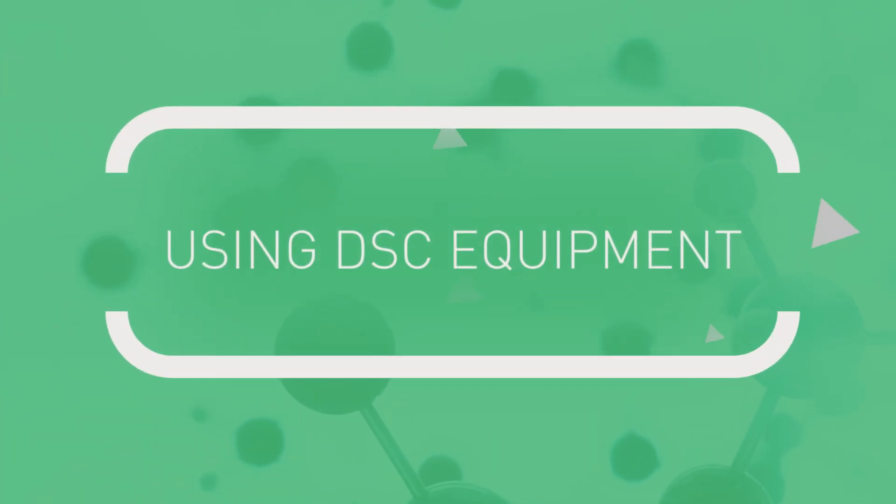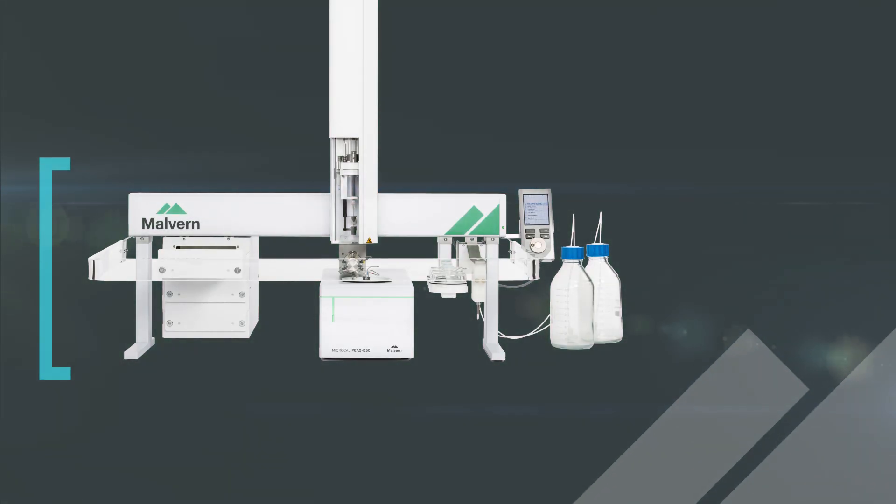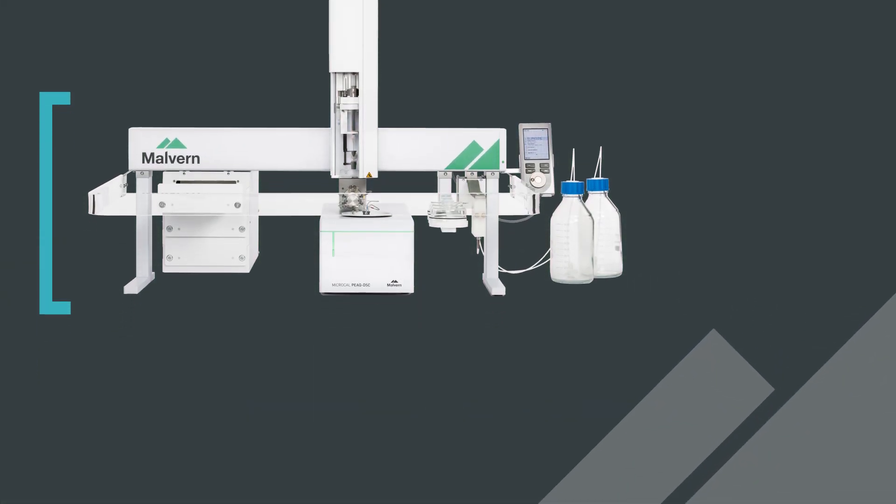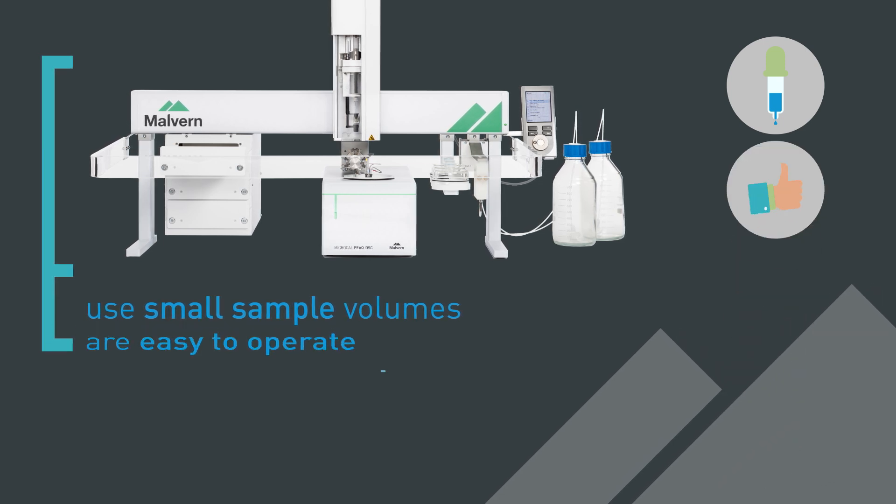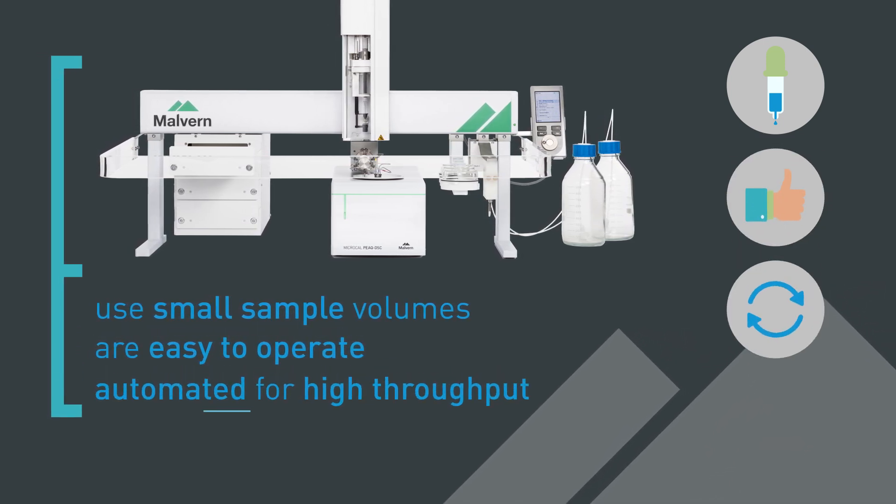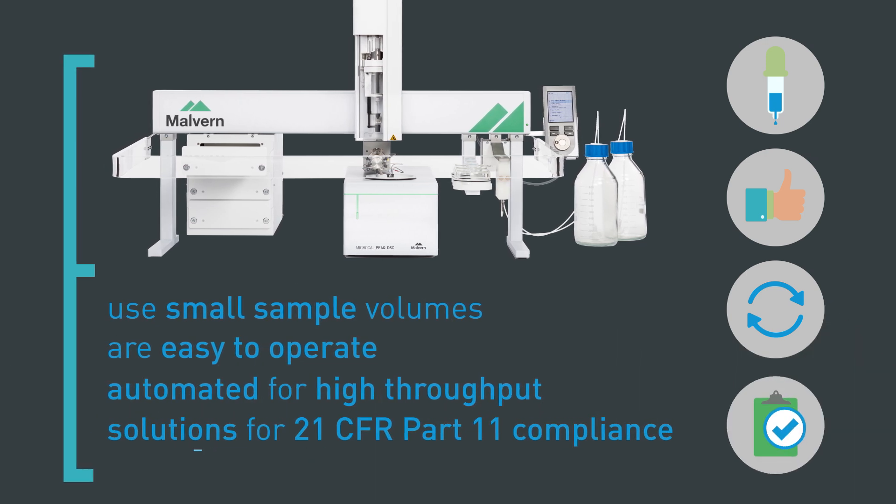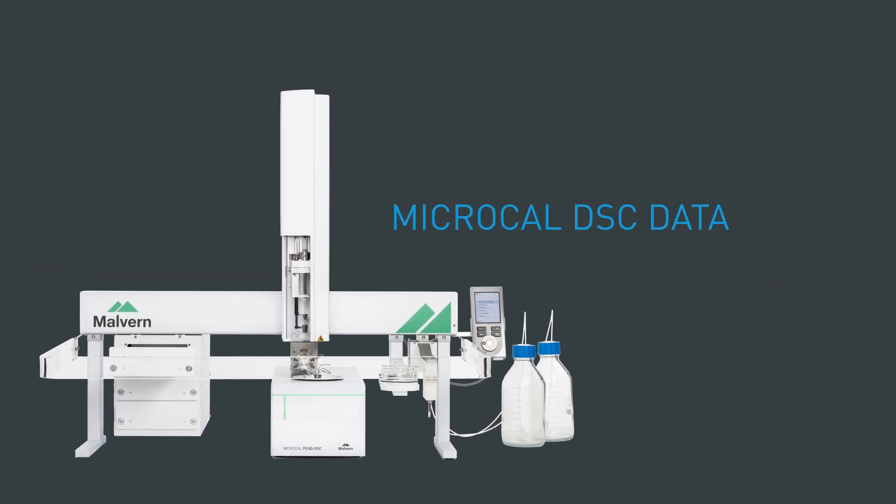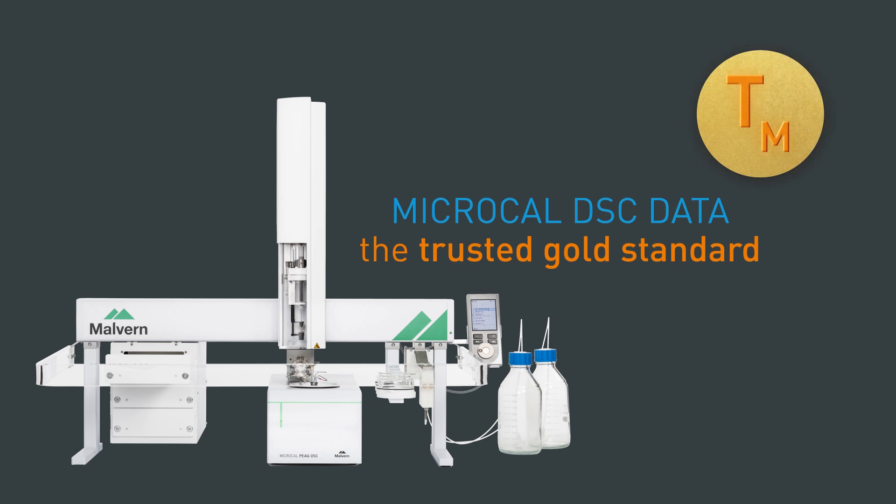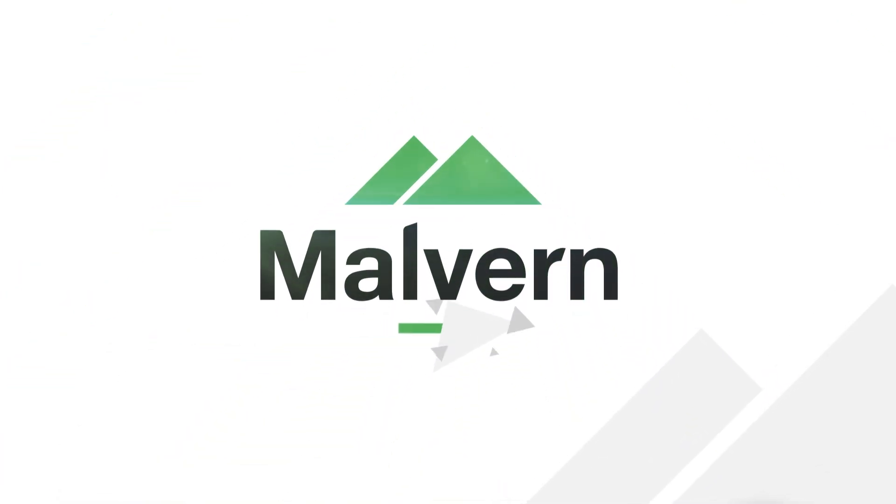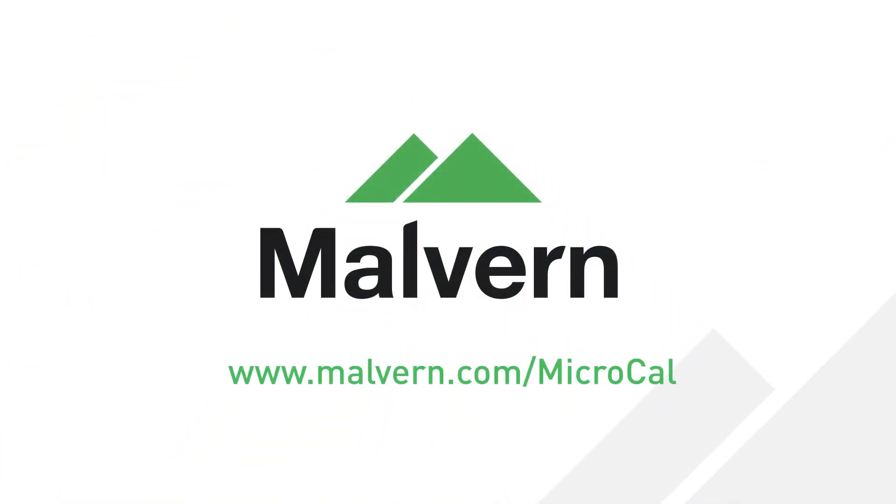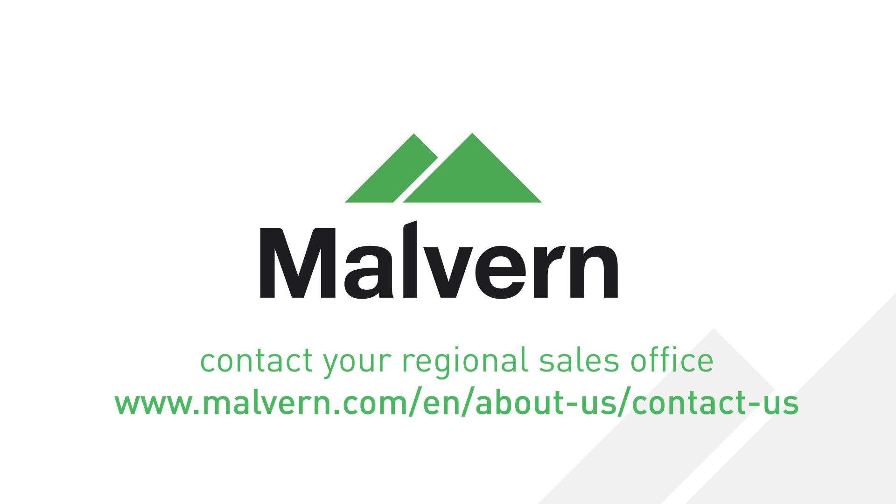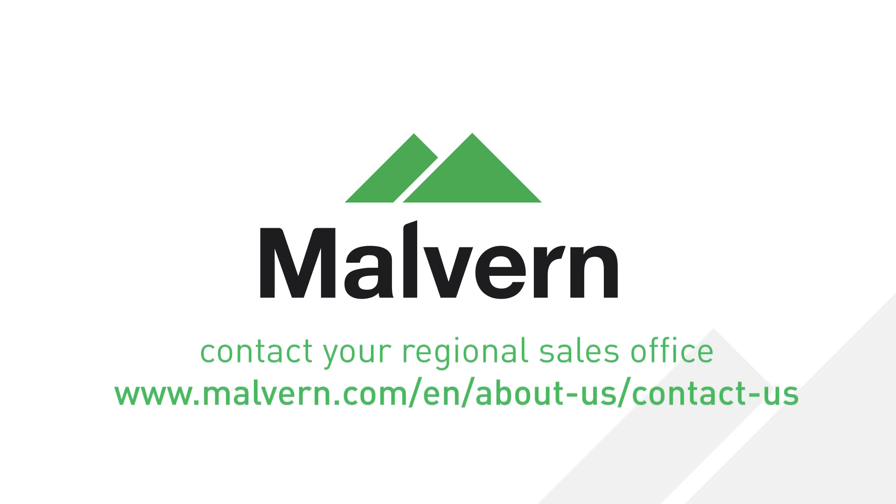Using DSC equipment: Malvern's microcal peak DSC systems use small sample volumes, are easy to operate, and can be automated for high throughput with solutions available for 21 CFR Part 11 compliance. Microcal DSC data is the trusted gold standard. For more information on microcal DSC and how it can support your research, please visit malvern.com/microcal or contact your regional Malvern sales office.